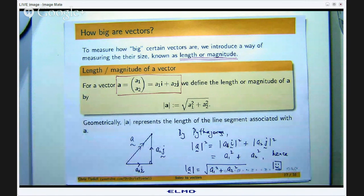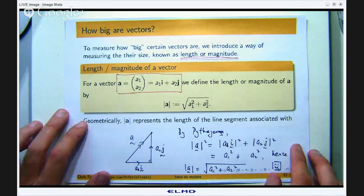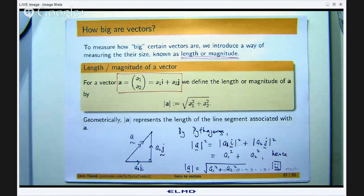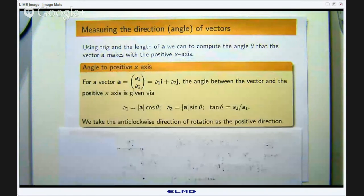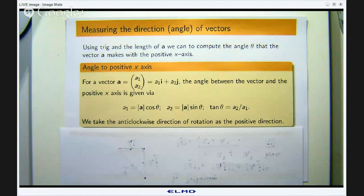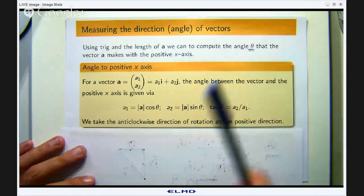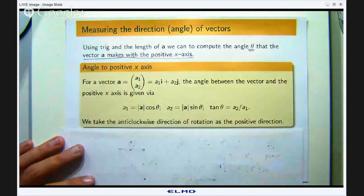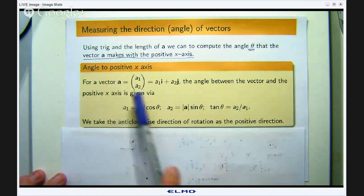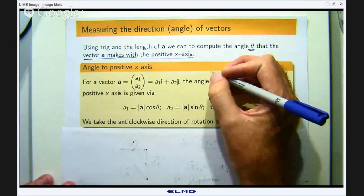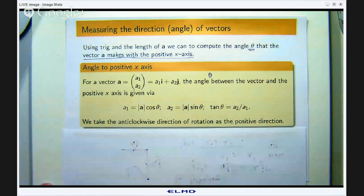Alright so that is how we introduce size or answer the question how big is a vector and I will do an example in a minute. The other important thing we are going to look at is the direction or the angle of a vector. What is the angle or the direction of a vector? And we are going to define this angle θ to be the angle that the vector a makes with the positive x axis in the xy plane. We can just use trig to come up with the following. Suppose we have a vector then the angle θ between the vector and the positive x axis is given by the following.